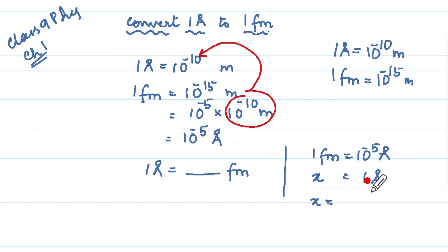Now x will be equal to, if you use the unity method, 1 times 1 upon 10 to the power minus 5. This negative power comes in the numerator and becomes 10 to the power 5. So we have 1 angstrom unit equal to 10 to the power 5 femtometers.